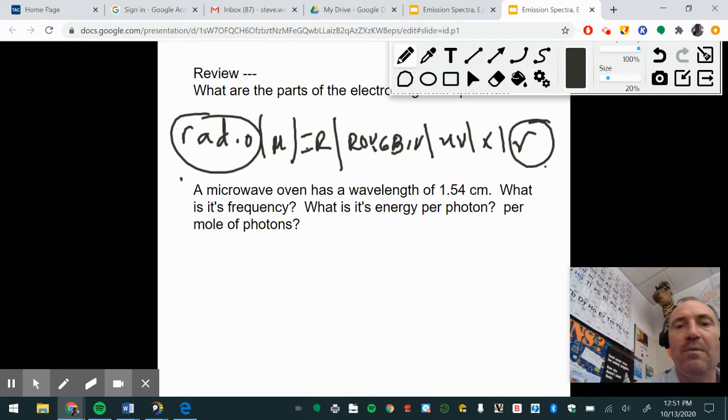Then what we did yesterday is you should know that C equals lambda times nu, where C is the wavelength and nu is the frequency. Frequency is measured in hertz - it is how commonly it repeats itself, how many cycles per second. And wavelength is measured in meters.